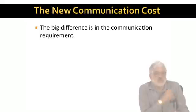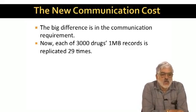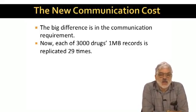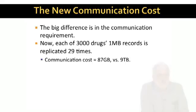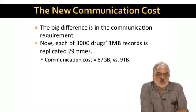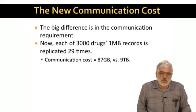What changes is the communication cost. We still have 3,000 drugs, and each has a one megabyte record. But now the mappers make 29 copies of each of these records rather than 2,999. And that's a big difference. The actual communication cost goes down from 9 terabytes to 87 gigabytes. Still substantial, but manageable on a student's computing budget.